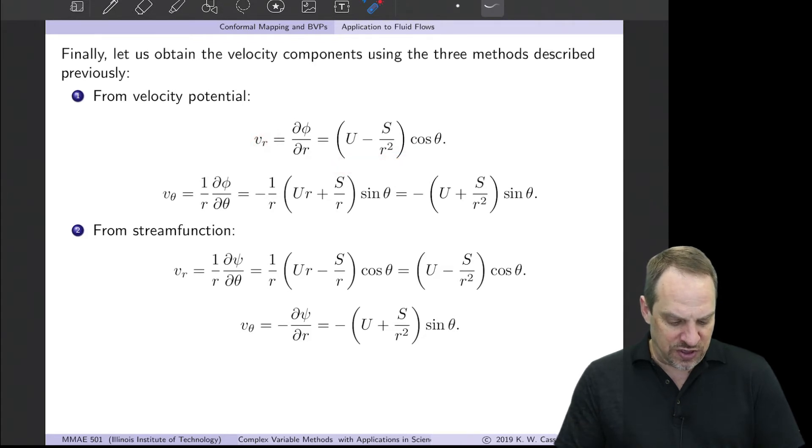If you do the similar thing for vθ, that's (1/r)(∂φ/∂θ). Again, here's 1/r, and then minus this. That's the ∂φ/∂θ. Simplify it a little bit, and you get this expression. Now I'll go through these kind of fast, because they're all the same.